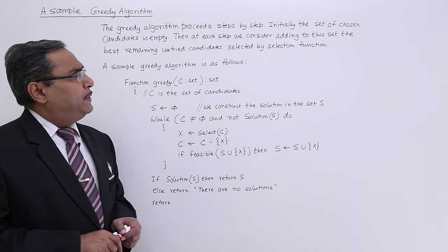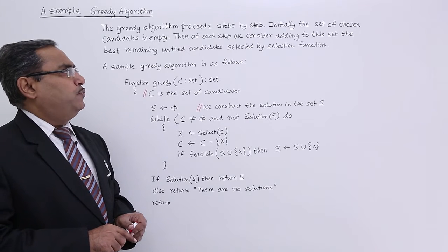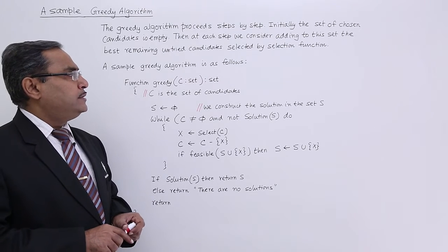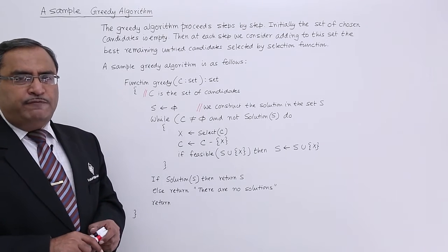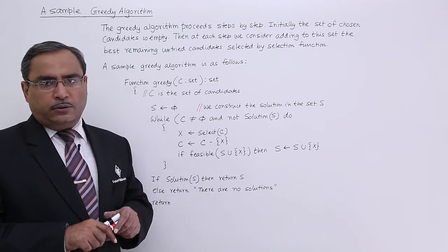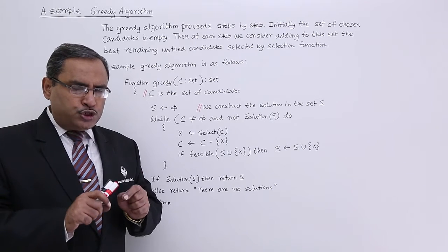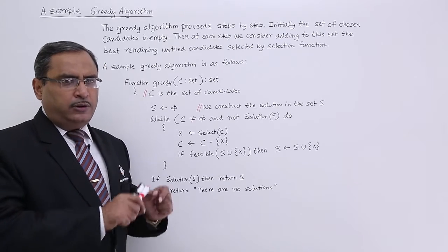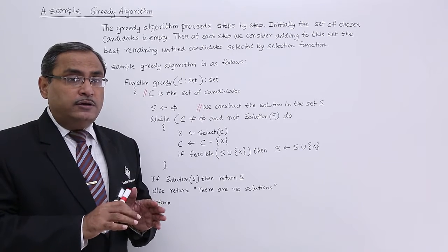The greedy algorithm proceeds step by step. Initially the set of chosen candidates is empty. Then at each step, we consider adding to this set the best remaining untried candidates selected by the selection function. We have four functions in this particular algorithm, and there is one function known as the selection function, which will find out the most promising candidate to be selected — most promising and not tried yet — to be included in the selected candidate set.